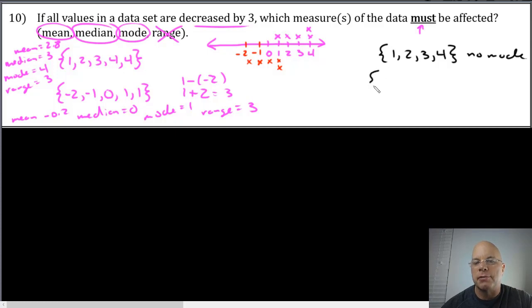But what is the mode on this original data set? There is no mode. If I decrease them all by 3, what's the mode for this data set? Again, no mode. So the mode doesn't have to necessarily change. If there is no mode, there still will be no mode. The two correct answers on this one are mean and median.